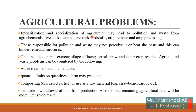Agricultural problems: intensification and specialization of agriculture may lead to pollution and waste from agrochemicals, livestock manure, livestock feed, crop residues, and crop processing. Those responsible for pollution and waste may not perceive it or bear the cost, which can hinder remedial measures. Agricultural waste problems can be countered by waste treatment and incineration, setting quotas on quantities a farm may produce, composting used as raw materials such as straw board and cardboard, and withdrawing land from production — though a risk is that remaining agricultural land will be more intensively used.